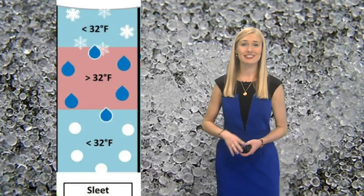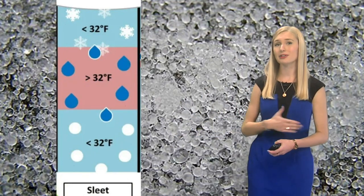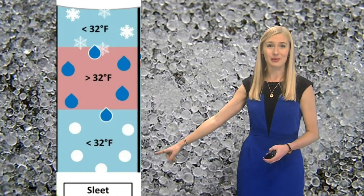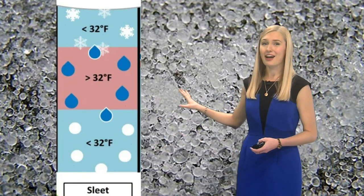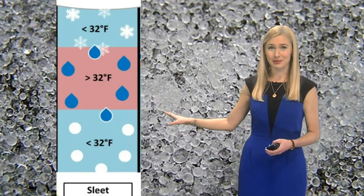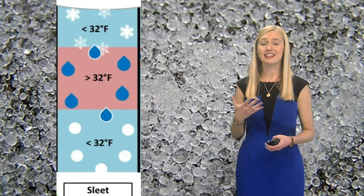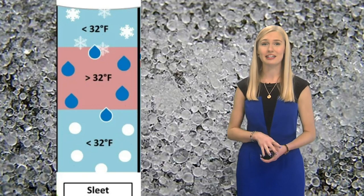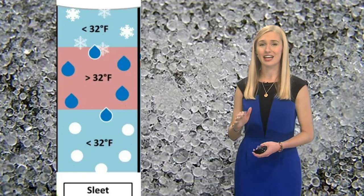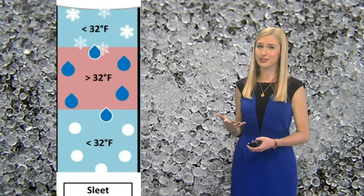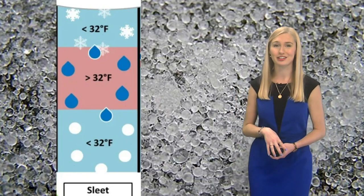The picture behind me is sleet. This is snow that melts completely into liquid water and then refreezes as it reaches the surface. Notice how it has a clear appearance to it — it kind of looks like tiny little ice cube pellets. This is created by near or below freezing temperatures at the surface and warm air above. The surface temperature is usually about mid-30s or colder.